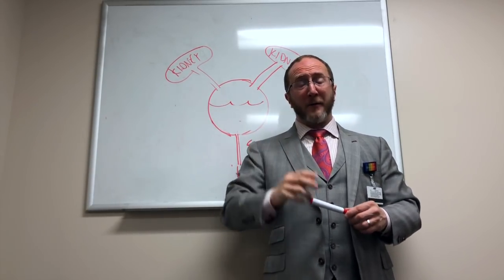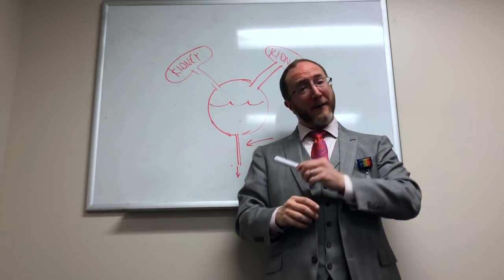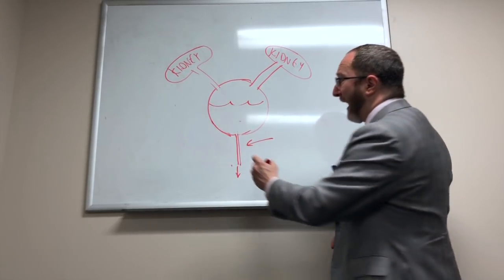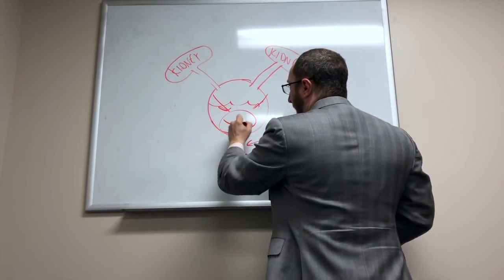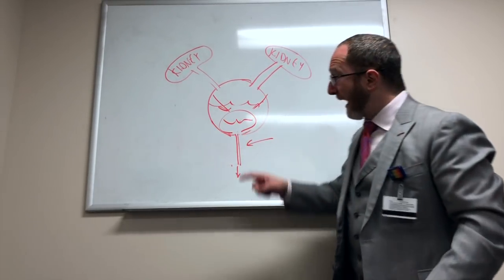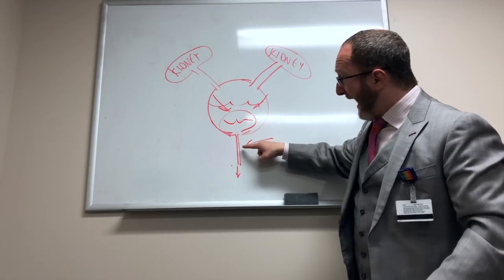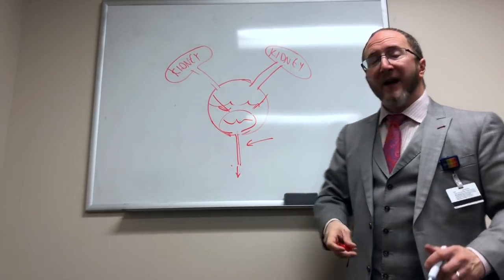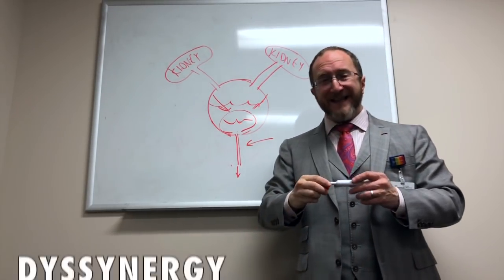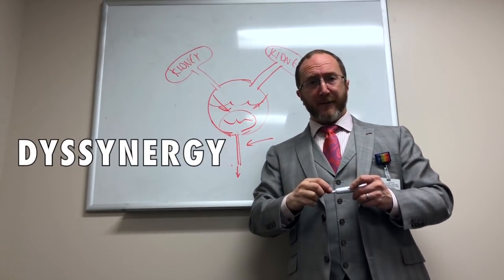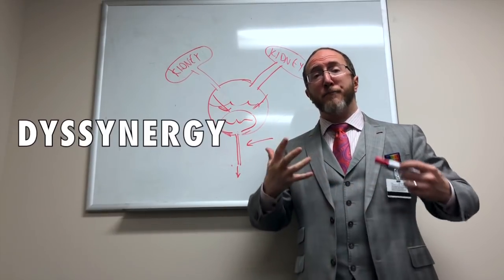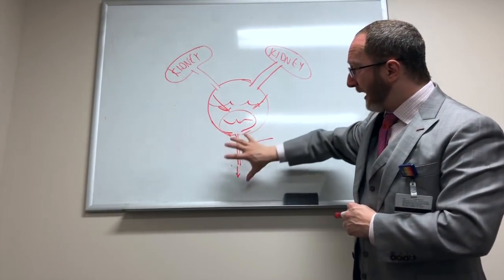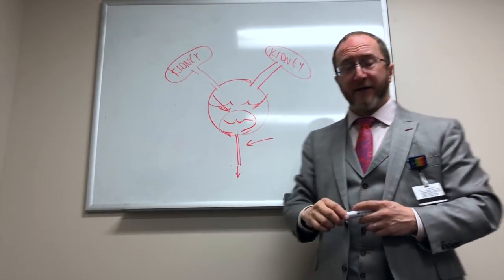There's a third problem we can see with MS bladder, where someone has a tight little racquetball bladder and the bladder neck is also closed. They have both problems, and we call that dyssynergy. Sometimes we have to use both a medicine for the bladder and a medicine for the bladder neck.